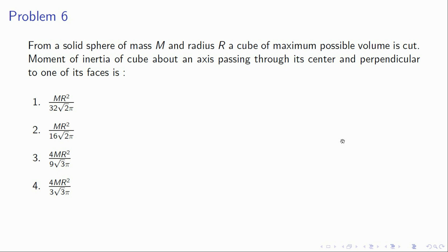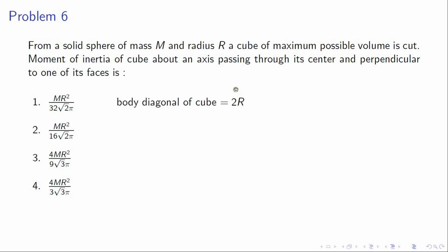Problem 6: there is a solid sphere of mass m and radius r, and from it you cut out a cube of maximum possible volume. Find the moment of inertia of this cube about an axis through its center, perpendicular to its face. The body diagonal of the cube equals the diameter of the sphere: √3 · a = 2r, so a² = 4r²/3.